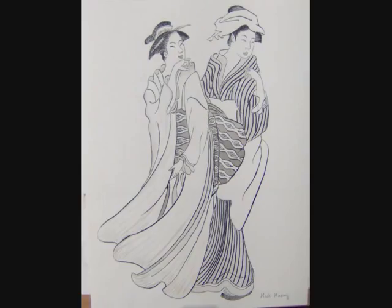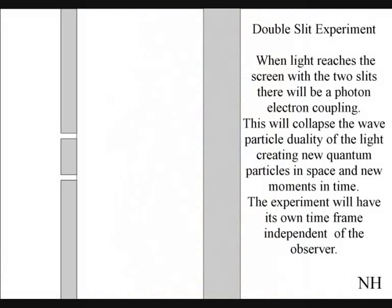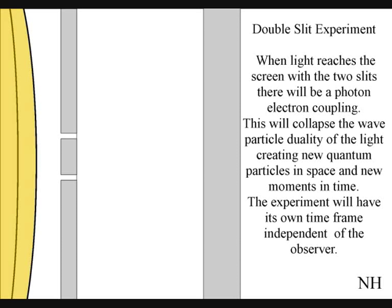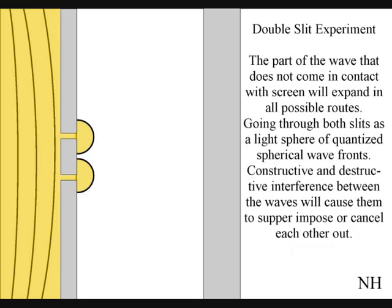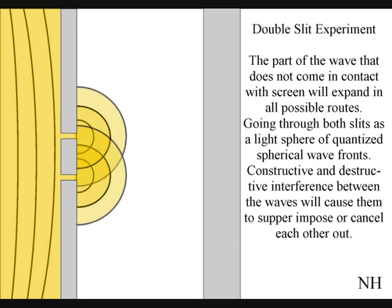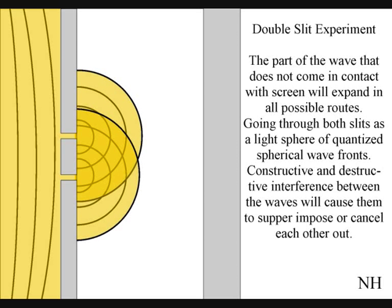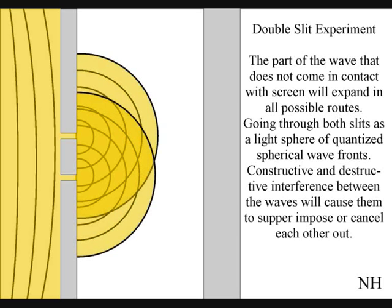The best way to see this happen directly with light is in the two-slit experiment. The light will expand in all possible directions as a wave-particle function of quantized wavefronts. When the wave function reaches the screen with the two slits, the photon will react with the electrons of the screen, collapsing the wave-particle duality of the light, creating new quantum particles in space and new moments in time. The part of the wave that does not come in contact with the screen will expand in all possible routes, going through both slits, as two light spheres of quantized wavefronts.